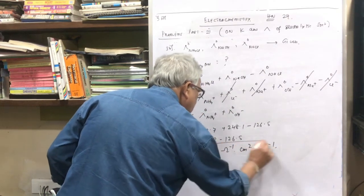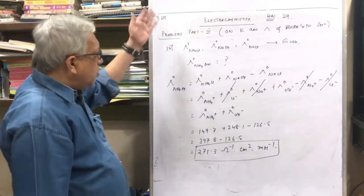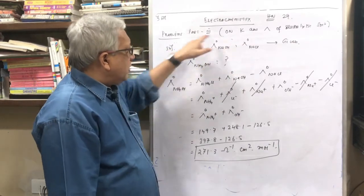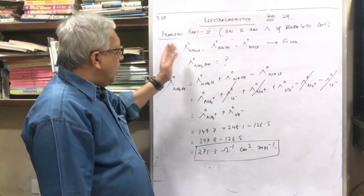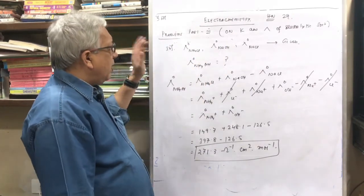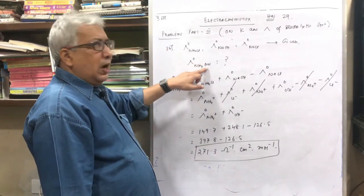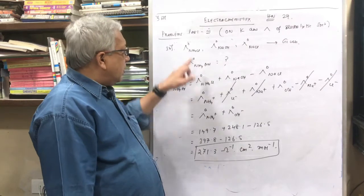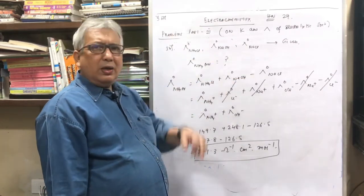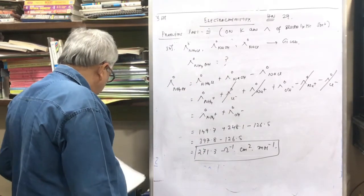It is similar to the manner in which we do Hess's law. I do the permutation and combination in such a manner that the given quantities by addition and subtraction give me lambda⁰(NH4⁺) + lambda⁰(OH⁻), while other ions cancel. That is why I did NH4Cl + NaOH − NaCl. With that, numerical number 34 is over.